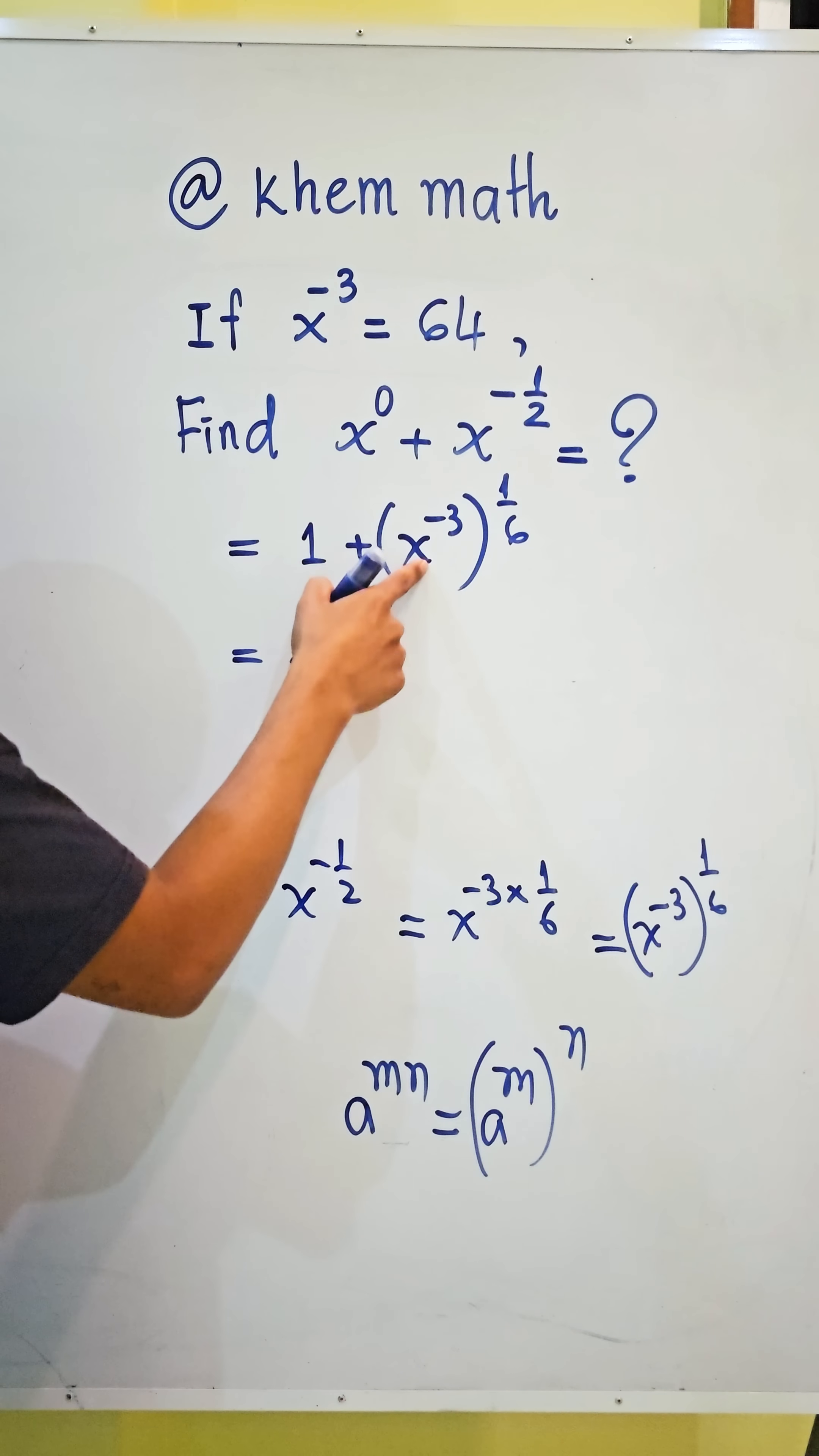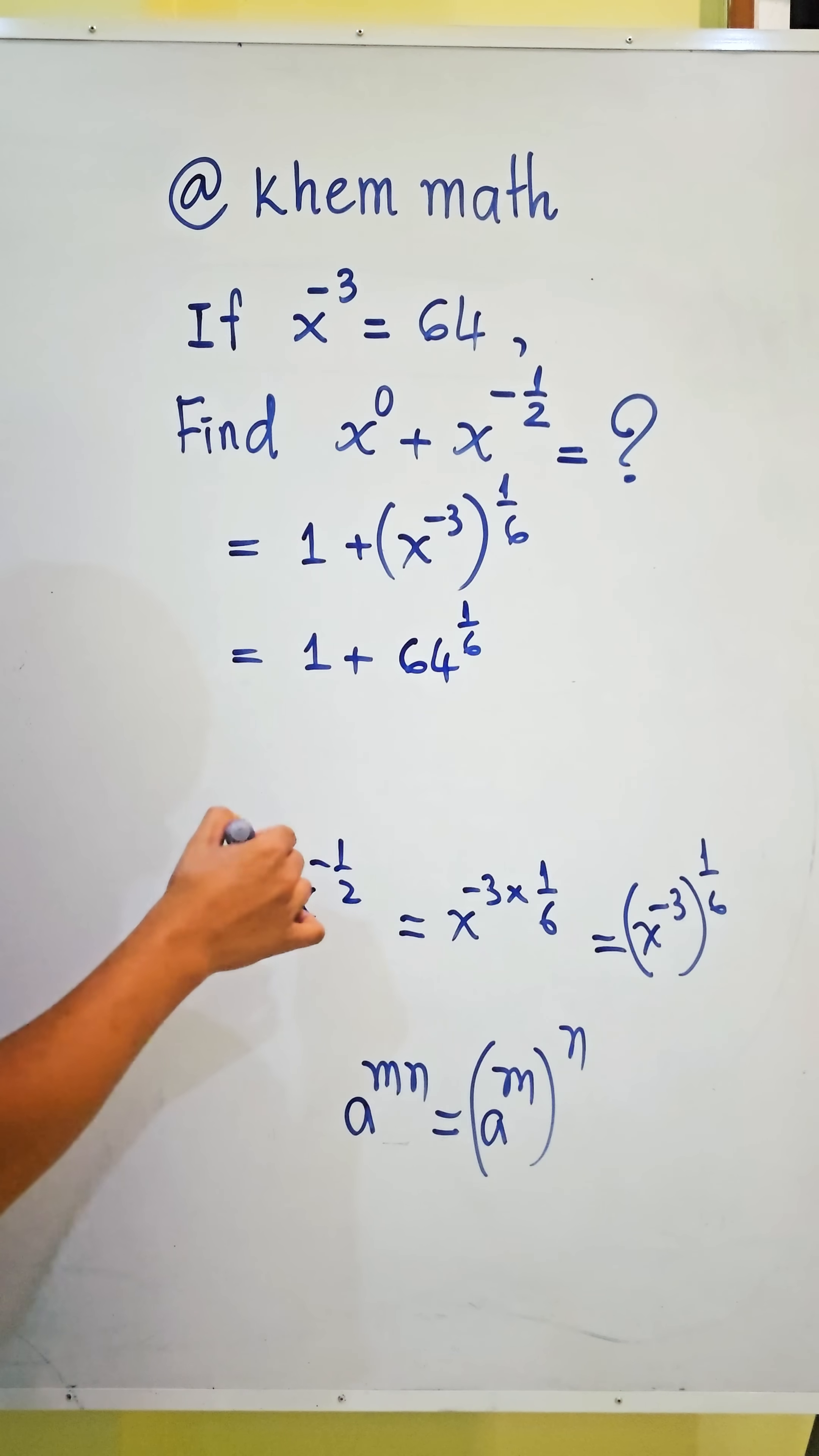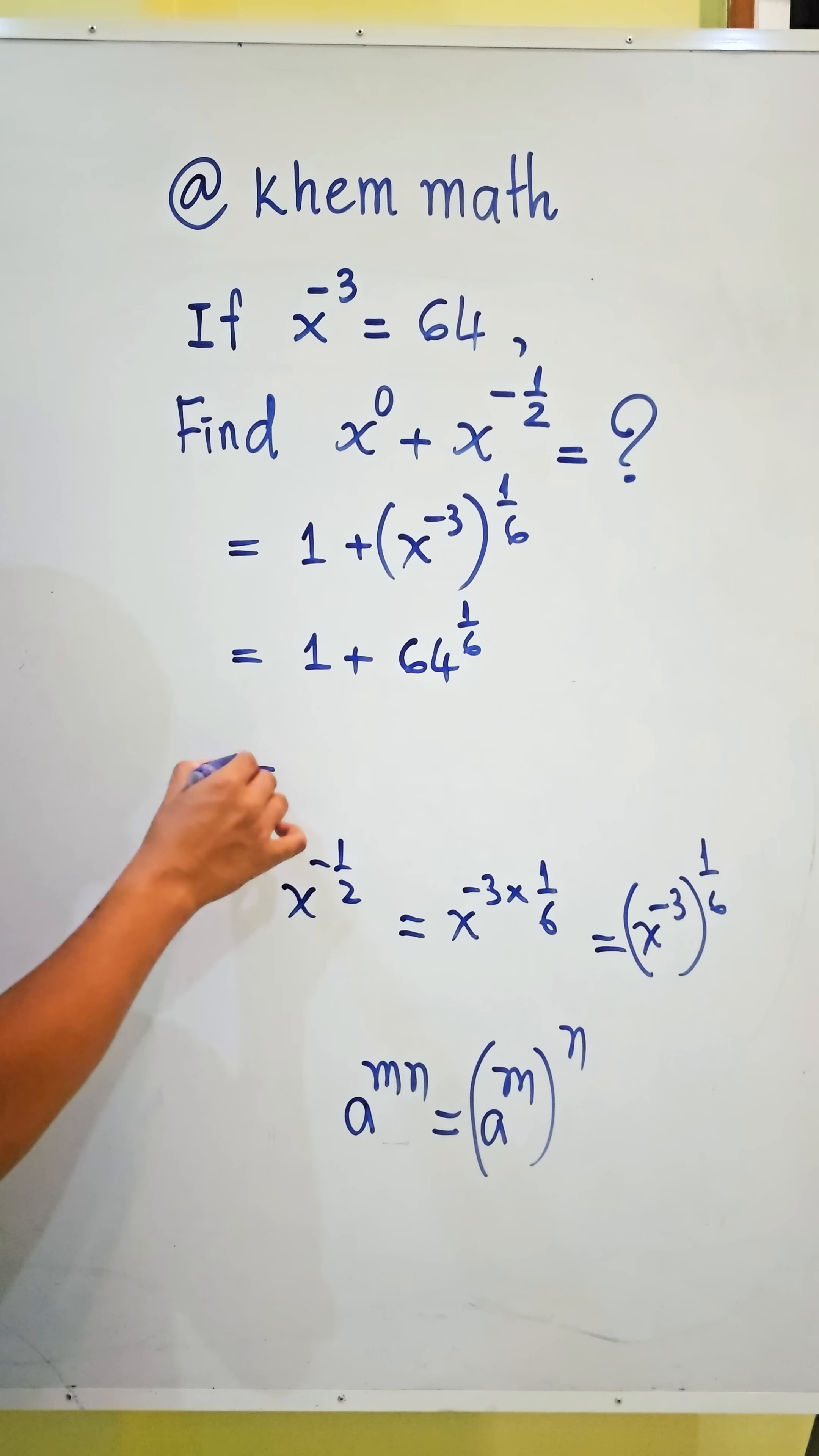So we replace it with 64, and 64 power 1 divided by 6. Here 64 equals 2 power 6, so it equals 1 plus 2.